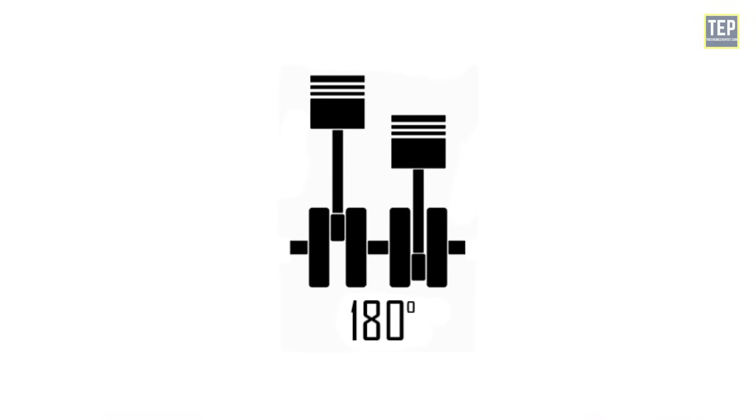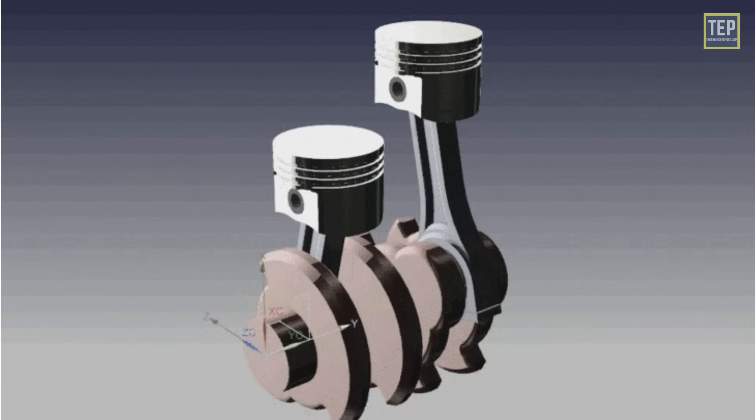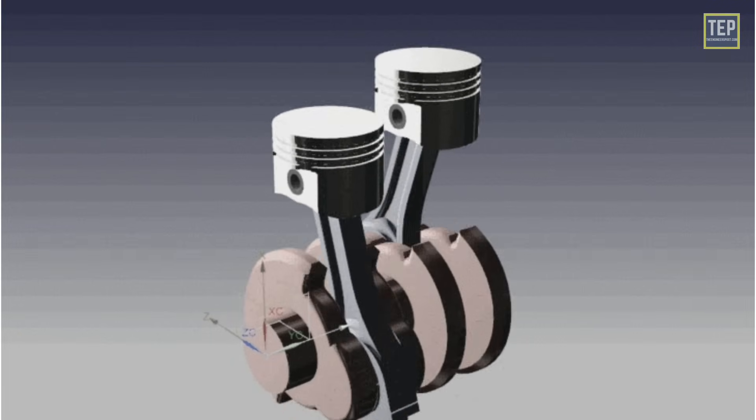In a 180-degree firing system, the cylinders move in opposite directions. This means that when one is going up, another one is going down.